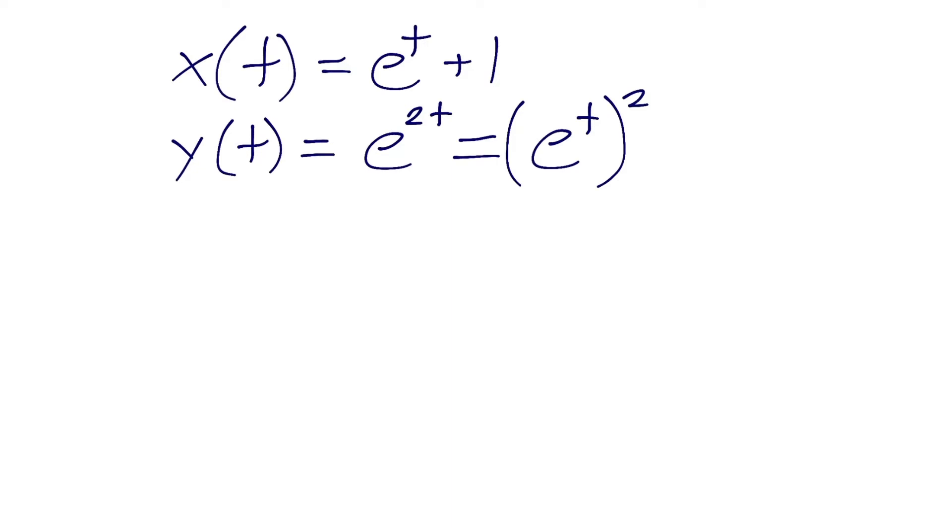And this helps us kind of analyze what kind of substitution we can make here. Because if we look at our x equation, and we bring this down here, we can rearrange this and say that if we write this as x, we'll get rid of the x of t. We can just say x equals e to the t plus 1. And now why don't we rearrange this, bring this 1 over to the left-hand side. We can say that we have x minus 1 equals e to the t.